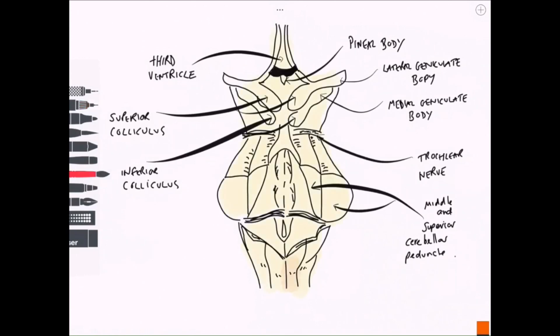Middle and superior cerebellar peduncles, these attach to the cerebellum and close off the fourth ventricle and the rhomboid fossa posteriorly. We can't see the cerebellum on this view.